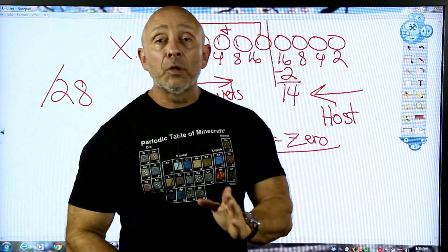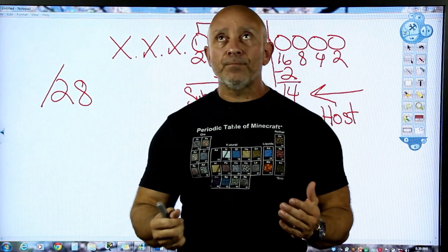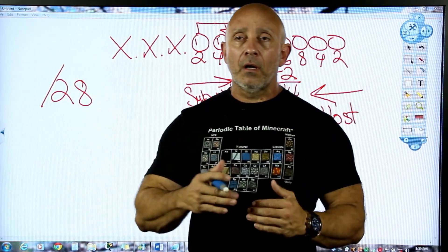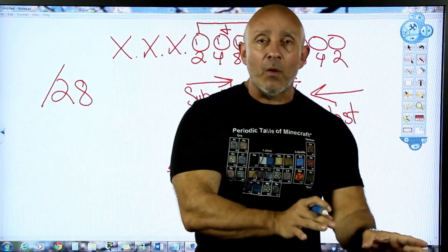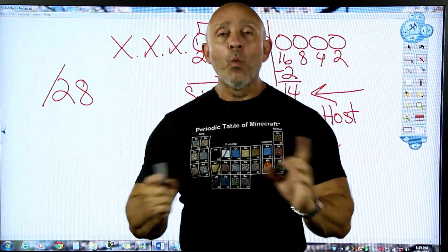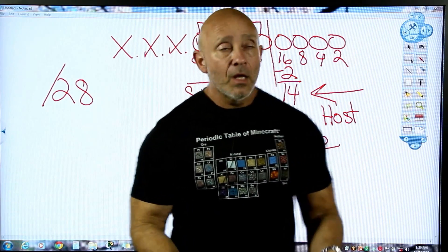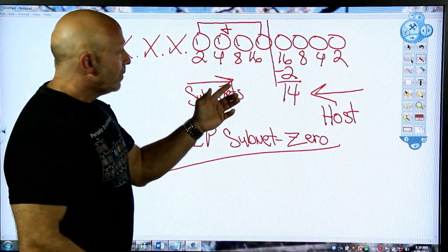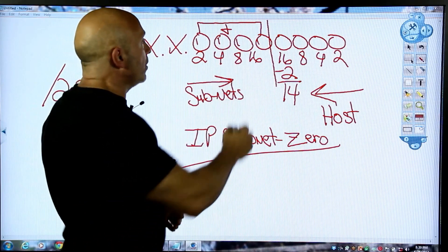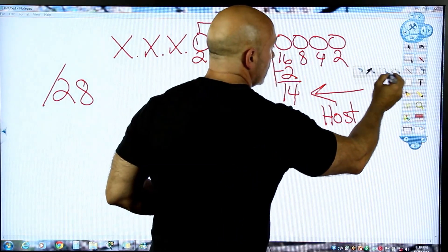Let me give you a heads up — they're tricky on the multiple choice questions. They'll tell you things like: they want to know the third subnet, or the first three subnets of this network, using the zero network or not using the zero network. So they want to know when you subtract two or when you don't. Your increment is the bit value right at the line.